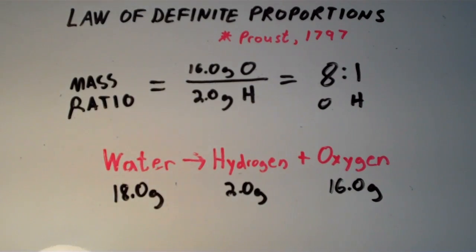The important thing to note here is that it doesn't matter how much water I start out with. It doesn't matter what I did to make the water. It doesn't matter where I got it. As long as it's pure water, it is always going to have this 8 to 1 ratio of oxygen to hydrogen.